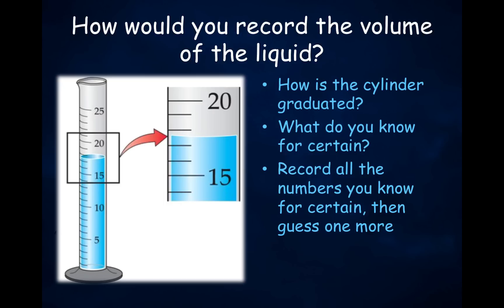How would you record the volume of the liquid using this graduated cylinder? First, look at how the graduated cylinder is graduated. What do you know for certain? Record all the numbers you know for certain, then guess one more. You know that this liquid has a volume between 17 and 18 milliliters. That means you have to guess one more number — 17.4, 17.5, or 17.3 milliliters would all be acceptable measurements.